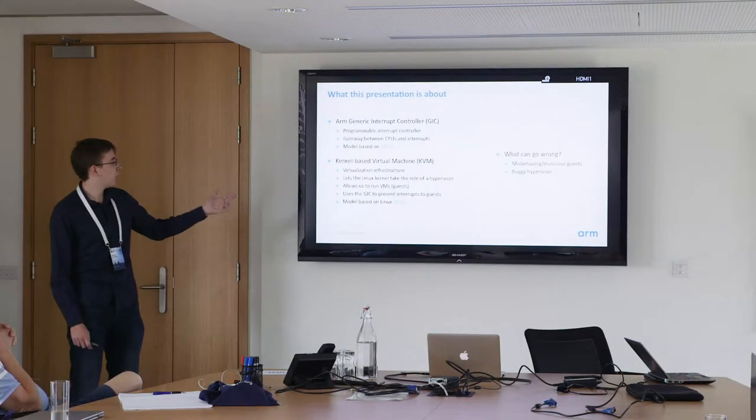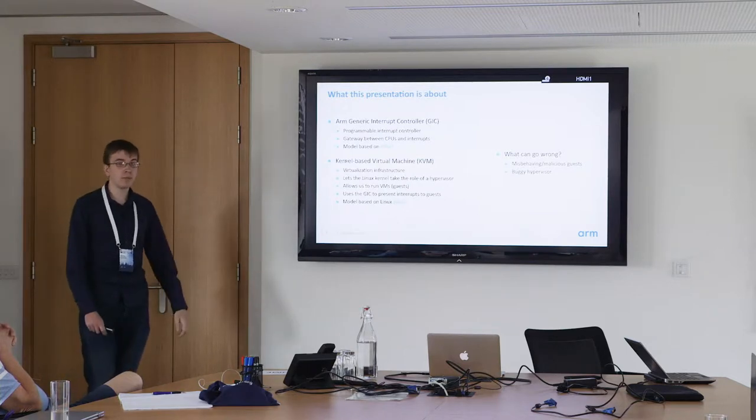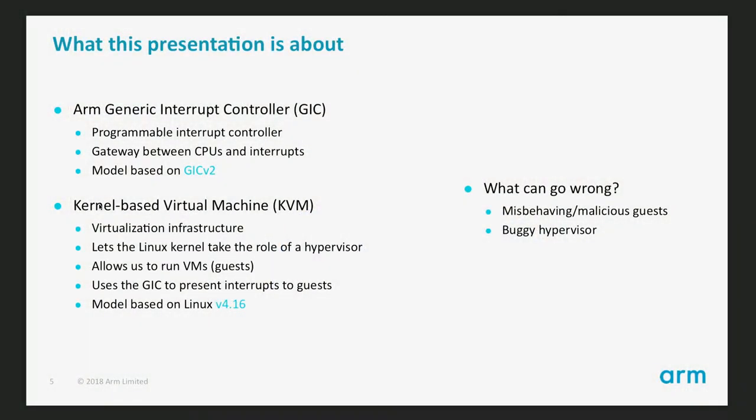I worked on that, and we also have the GIC — since we need to have interrupts — and the GIC is ARM's programmable interrupt controller. In a sentence, I could describe it as the gateway between the CPUs in the system and the interrupts. As an appetizer, when virtual machines crash it's annoying but okay. If a virtual machine crashes the host system it's much worse, so we need to prevent that. A buggy hypervisor could also fail to deliver interrupts to the virtual machine, preventing its correct behavior.